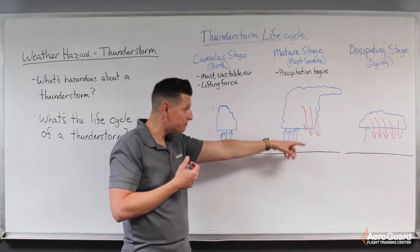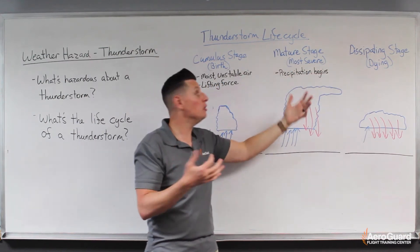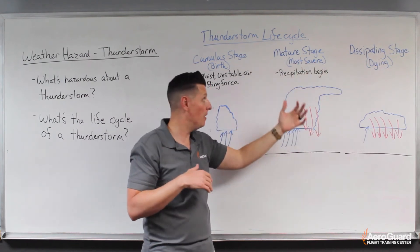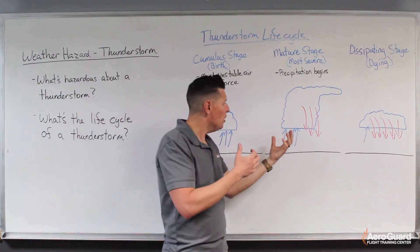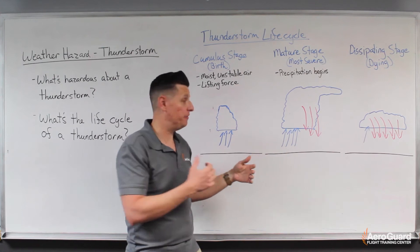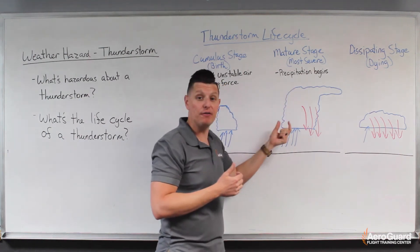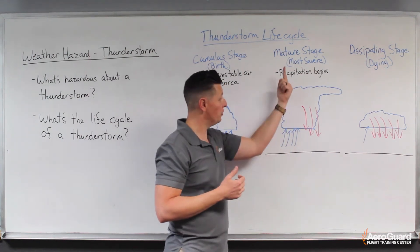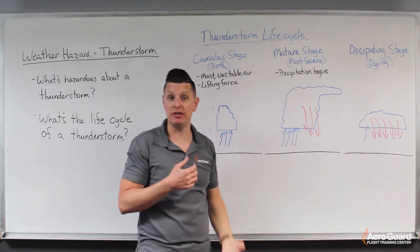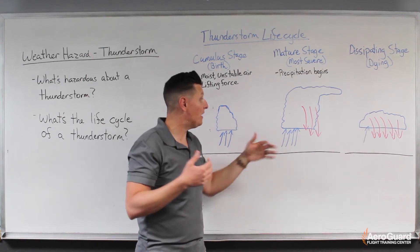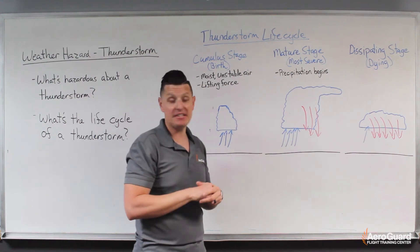When precipitation begins, this marks the beginning of the mature stage, which is certainly the most severe part of a thunderstorm. As I try to illustrate here, we have areas of intense lifting force where air is mostly rising, and then areas where the air is being pushed down by all of the precipitation that's falling out. This creates dramatic changes in temperature, huge amounts of instability in the air, and massive amounts of turbulence.